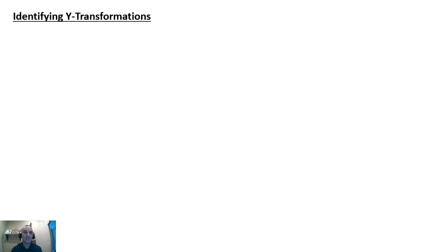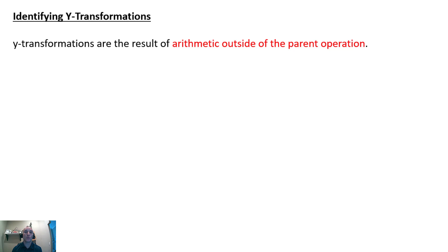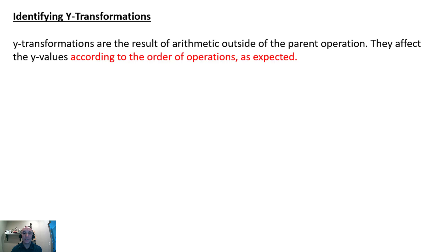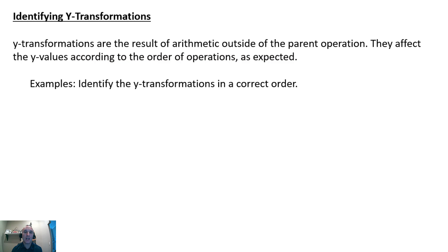Let's move on to identifying Y-transformations. Y-transformations are the result of arithmetic outside of the parent operation — it's the arithmetic happening to the parent operation. They affect the Y values, which is why they're called Y-transformations, and they follow the order of operations. We have to identify them in the correct order for our graph to be correct.